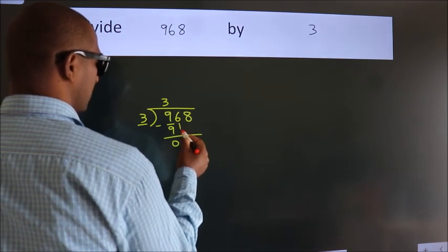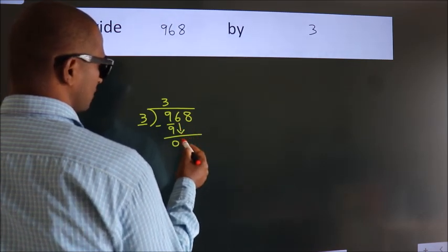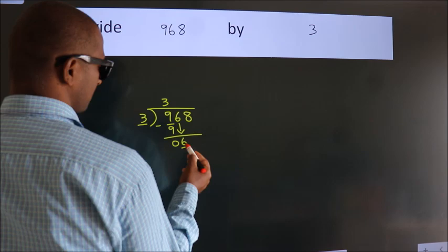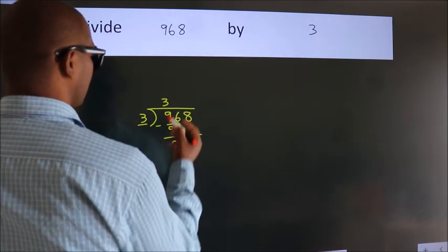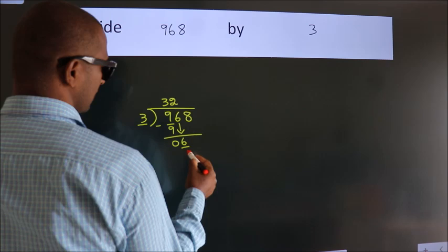After this, bring down the beside number. So, 6 down. When do we get 6 in the 3 table? 3 times 2 is 6.